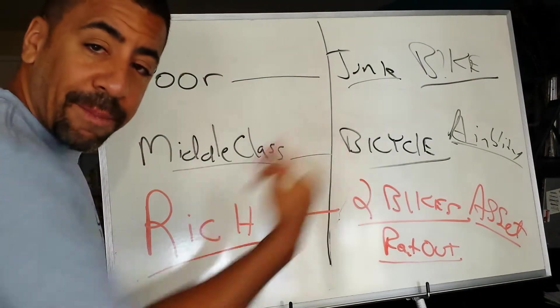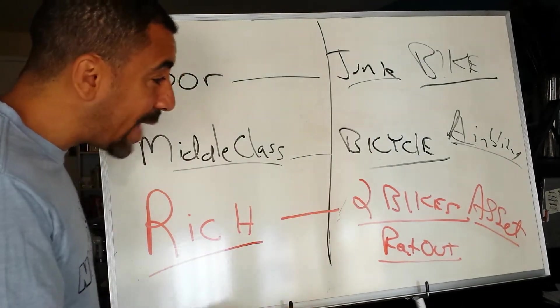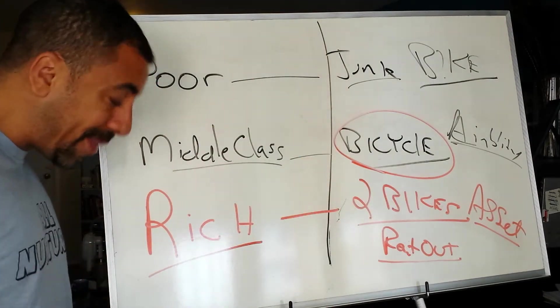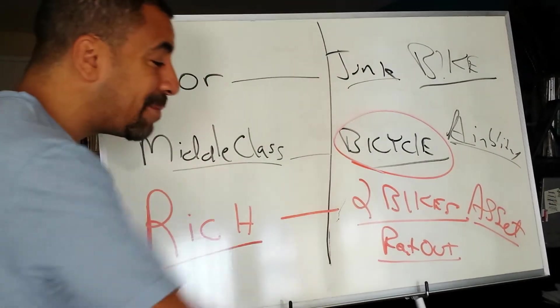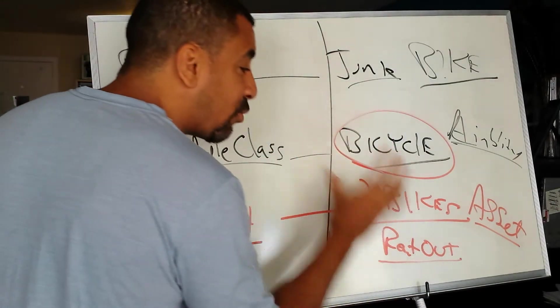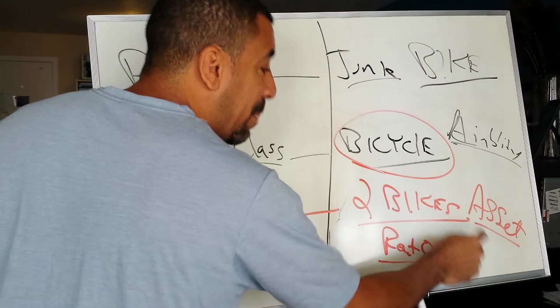Once they get a bunch of money from renting that second one out, they can go buy a bicycle for cash, not have to pay for it month by month. Then they get to rent out the second bike to create more money. So what they do is they take their money and create or buy assets to pay them more.